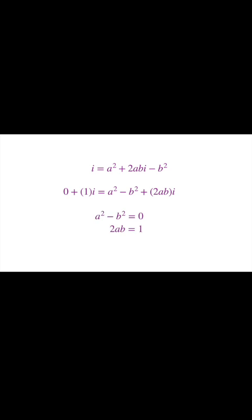So we can equate the real and imaginary parts, giving us a squared minus b squared must be 0, and 2ab has to be 1. Now we have two equations and two unknowns.